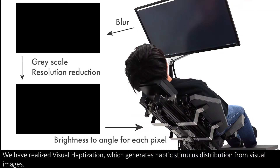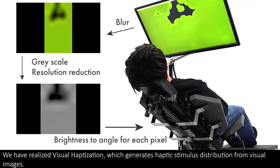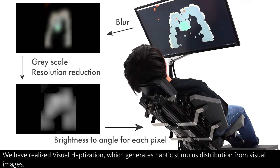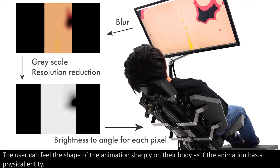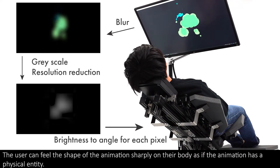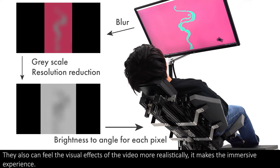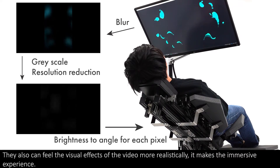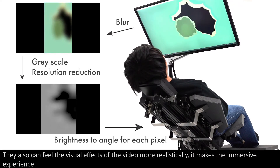We have realized visual haptization, which generates haptic stimulus distribution from visual images. The user can feel the shape of the animation sharply on their body as if the animation has a physical entity. They also can feel the visual effects of the video more realistically, which makes the immersive experience.